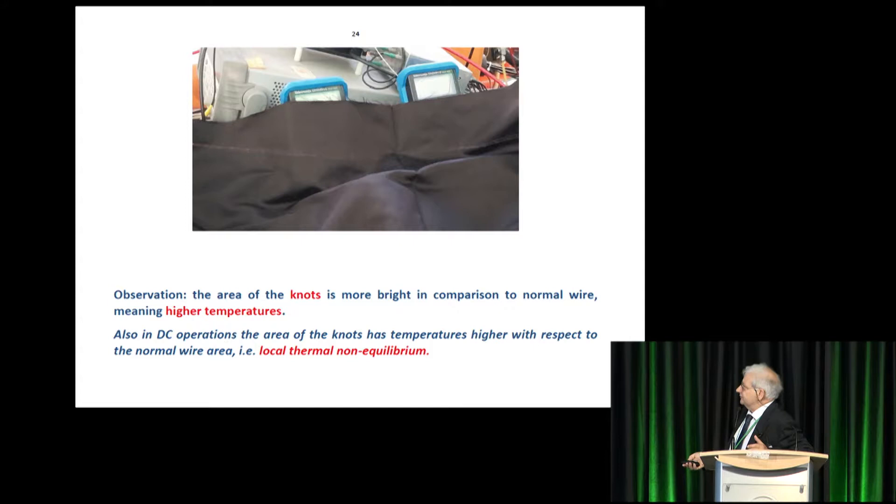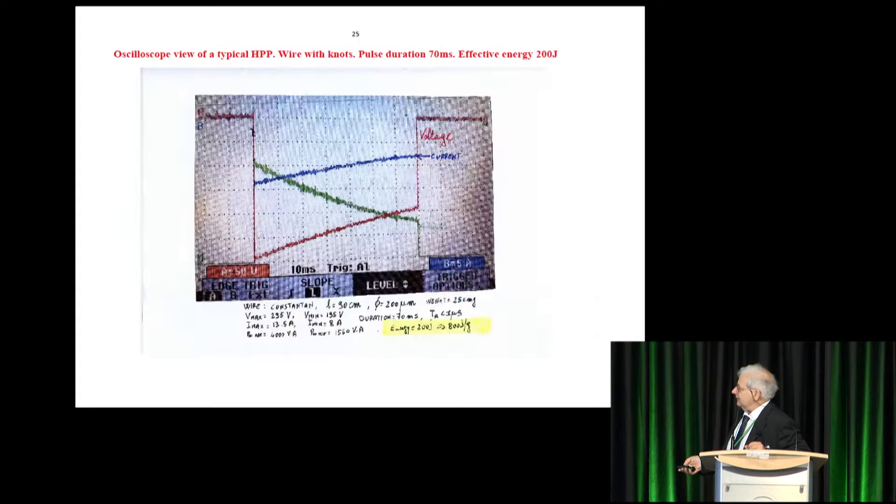So, the key point is, where are knots, the temperature is higher than the normal wire. It's a key point. So, this is a picture of oscilloscope, about the voltage current given. This is a short piece of wire for, just for demonstration. So, the energy given is about 800 joules per gram of material. So, the pulse is really dangerous. Better don't touch him. So, bye-bye.